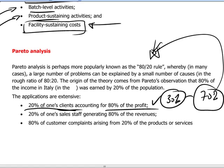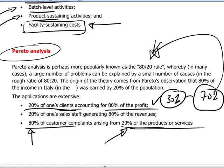We can also see this in the form of problems and complaints not being evenly spread across all the company's products or services, but having a way of clustering or concentrating themselves. For example, 80% of customer complaints rising from 20% of the products or services means that we can eliminate a great number of complaints by focusing on those products and services that give rise to them. Pareto analysis facilitates management in organizing its time and priorities so as to tackle the big problems first, where it gets the most benefit from time spent.